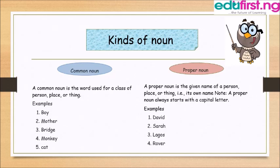The proper noun is a name given to a person, animal, place or thing that is its specific name. A proper noun always starts with a capital letter.